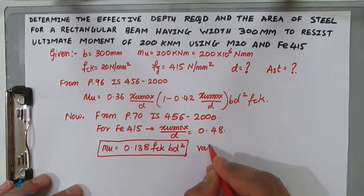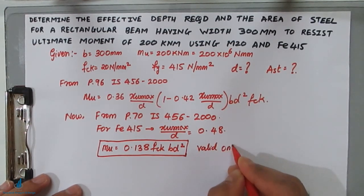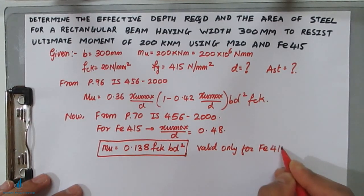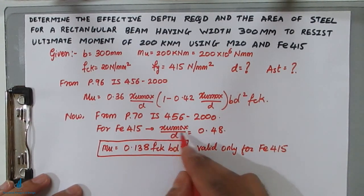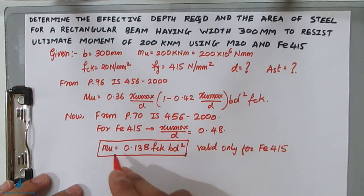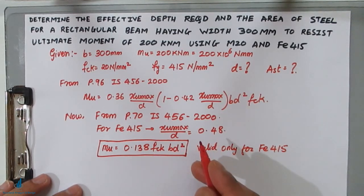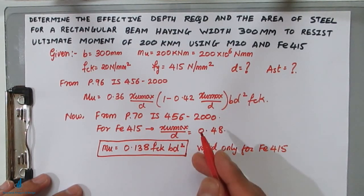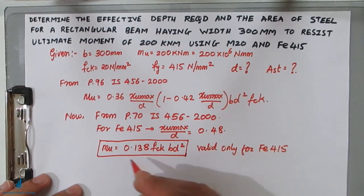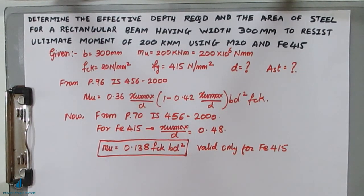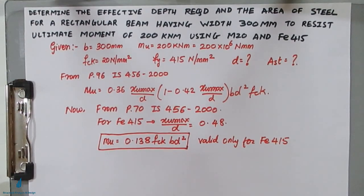This simplified formula is valid only for Fe 415. If you use Fe 500 or Fe 250, you must substitute the corresponding xu,max/d value and derive the corrected simplified formula. In the next analysis problem, I will show the simplified formula for Fe 500 and Fe 250.